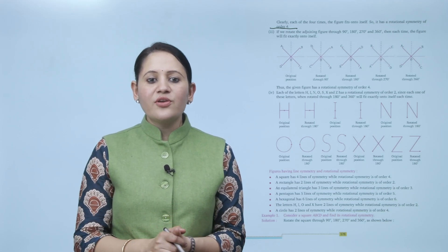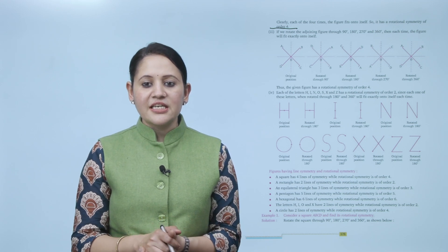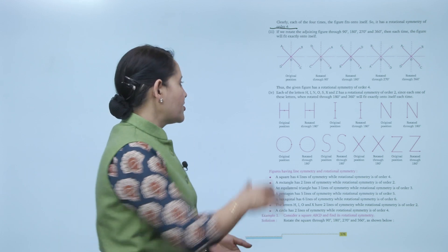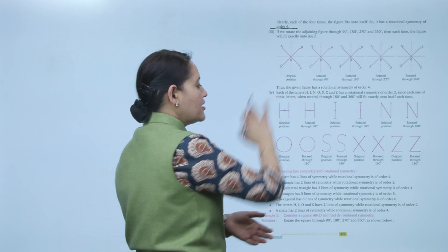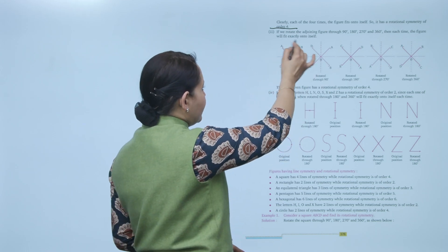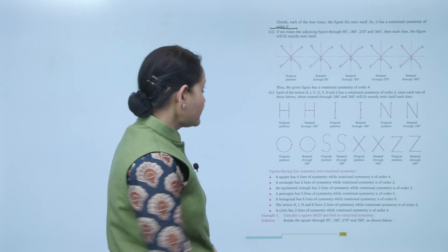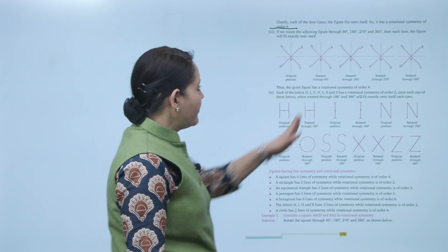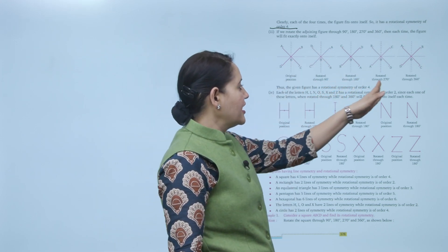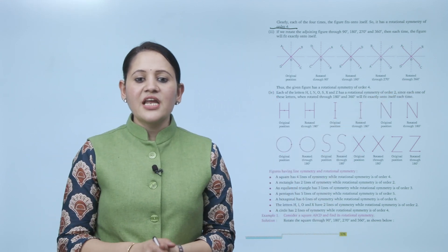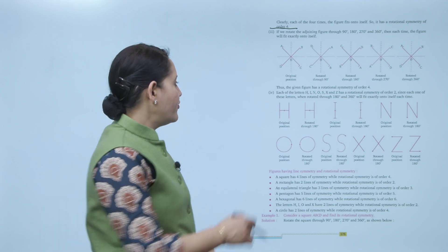If we rotate the adjoining figure through 90 degrees, 180 degrees, 270 degrees, and 360 degrees, each time the figure fits exactly onto itself. Rotating 90 degrees brings A, B, C, D to new positions; 180 degrees and 270 degrees similarly reposition the vertices. At 360 degrees it returns to the original. Thus the given figure has the rotational symmetry of order 4.